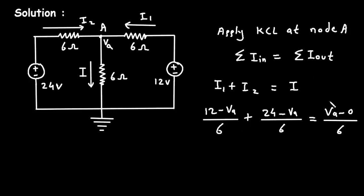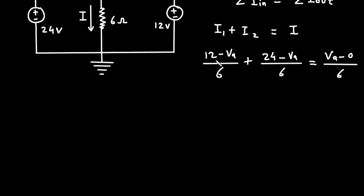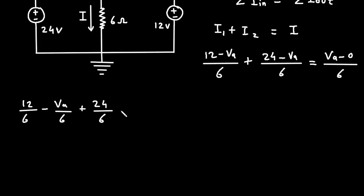Now let's simplify: 12/6 minus VA/6 plus 24/6 minus VA/6, taking the terms together.